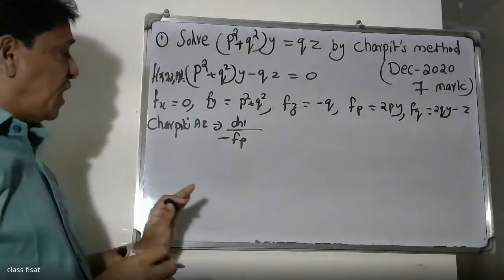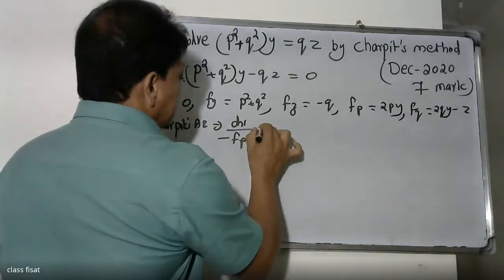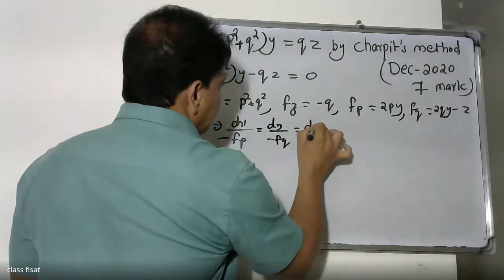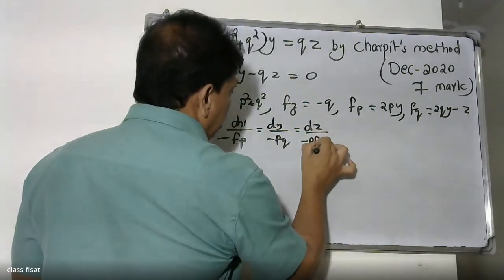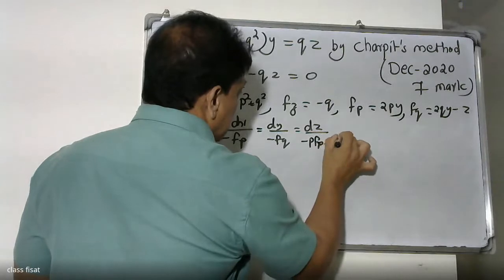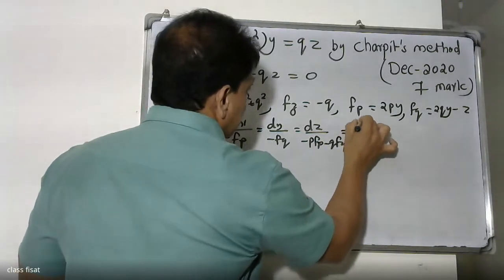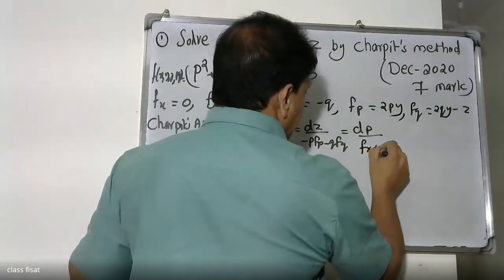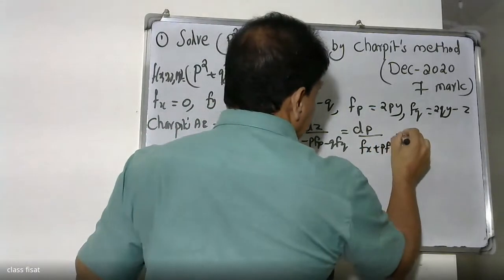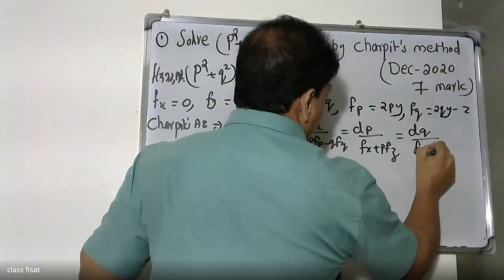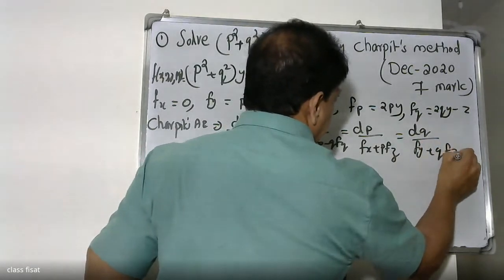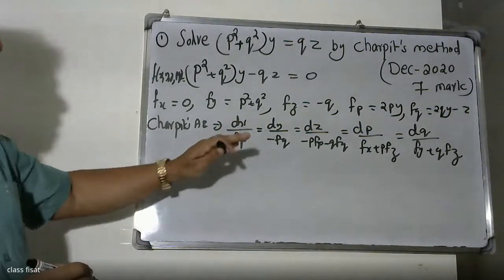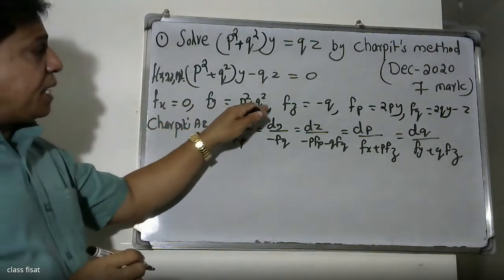Now we set up Charpit's auxiliary equations: dX over Fp equals dY over FQ equals dZ over (p·Fp plus q·FQ) equals dp over (Fx plus p·Fz) equals dQ over (Fy plus q·Fz). This is the Charpit's actual equation and we now substitute the partial derivatives.